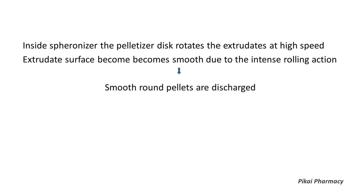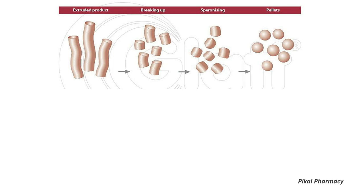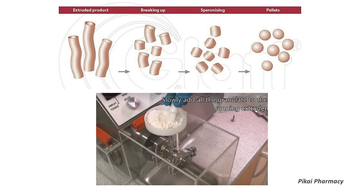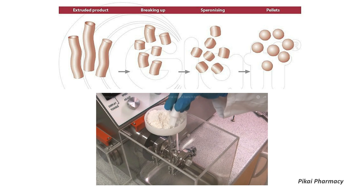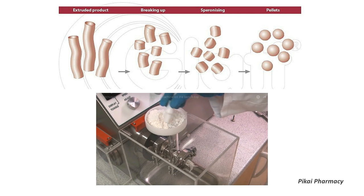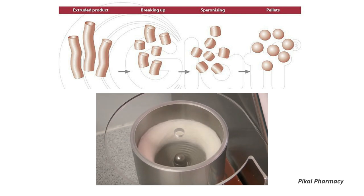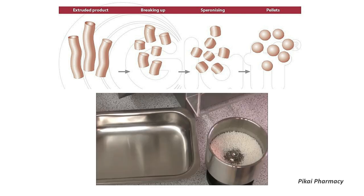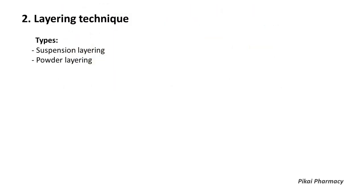A diagram shows how long cylindrical extrudate products are spheronized into spherical pellets. A video demonstrating the extrusion-spheronization process is available from the channel Caliper Process, linked in the description below.